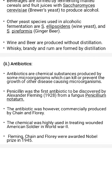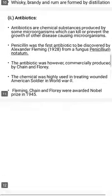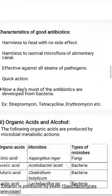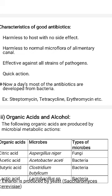Another important product is antibiotics. Antibiotics are chemical substances developed from microorganisms which prevent the growth of other microorganisms. The first antibiotic was discovered by Alexander Fleming from a fungus called Penicillium notatum. Nowadays most antibiotics are developed from bacteria. Scientists Fleming, Chain, and Florey got the Nobel Prize for large-scale commercial production of antibiotics, which was used during World War II. Good characteristics of antibiotics: no side effects, harmless, affect a particular pathogen, and quick action. Examples: streptomycin, tetracycline, erythromycin. Importantly, antibiotics should be taken under doctor's prescription only; overdose is harmful.